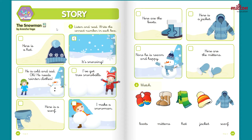Before you start, let's look at the pictures together to see if there are any objects you recognise. For example, here I can see a hat. And in this picture I can see some snowflakes. Here I can see a scarf.